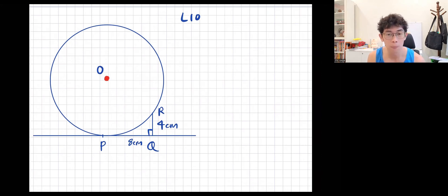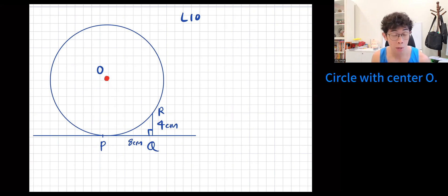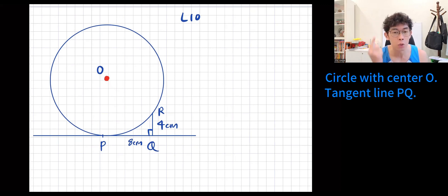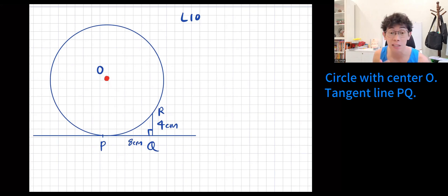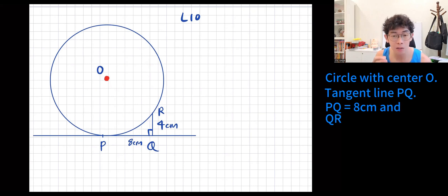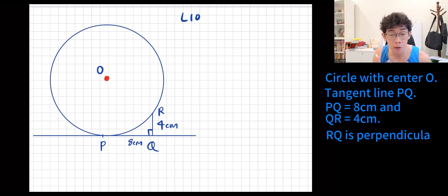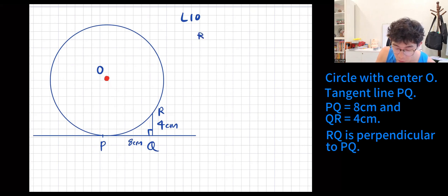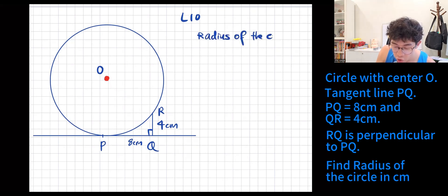Let me read out the question to you. The question works this way: there is a huge circle with center O; there is a tangent line PQ — P is obviously the tangent point. P to Q shows 8 cm, R to Q shows 4 cm, and RQ line is perpendicular to PQ — so there's a 90 degree.